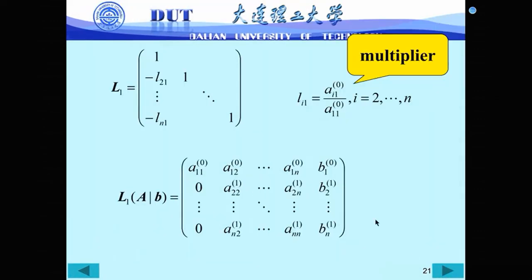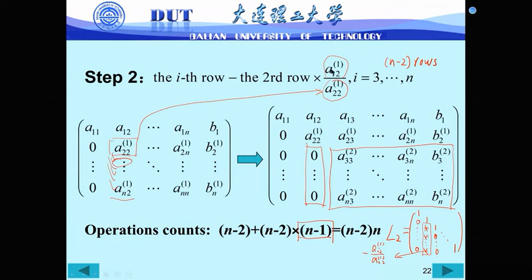For step 2, also the multiplier is a ratio with a denominator. This denominator is A₂₂ with superscript 1, meaning this number is obtained after step 1. So this number is different from the original A₂₂. We cannot know A₂₂⁽¹⁾ from the original matrix directly — we have to use Gaussian elimination to obtain it.